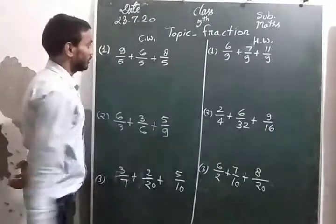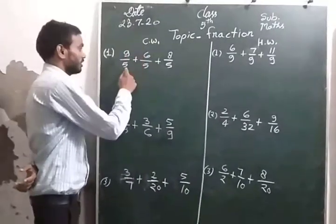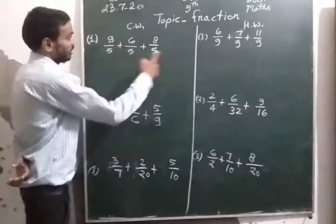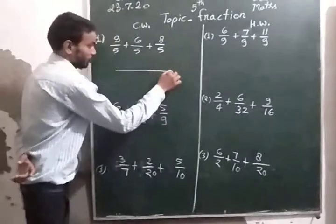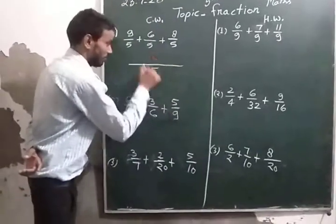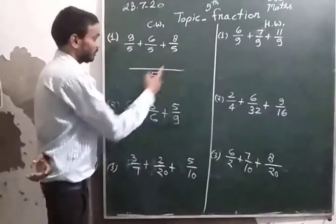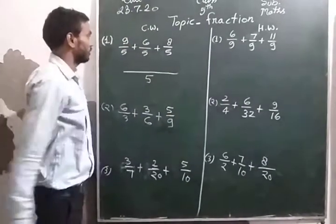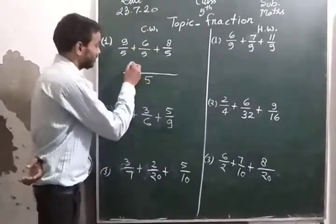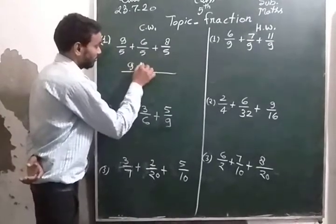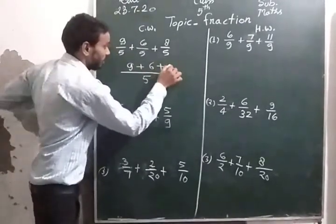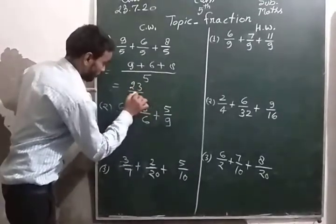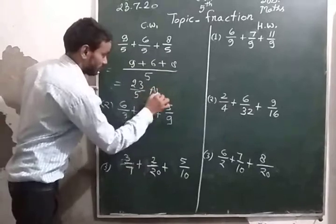Dear student, this is the fraction. In this, this is the numerator and this is the denominator. Then take LCM. The denominator is same, so we take the LCM should be same. Here is 5. When the denominator is same, the LCM is also same. Then the numerators should be added the same, like this. 9 plus 6 plus 18. When we add, we get 23 upon 5. This is your final answer.